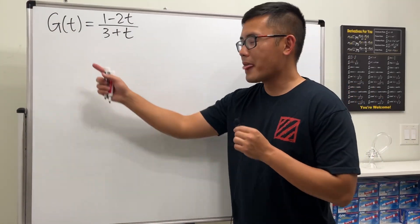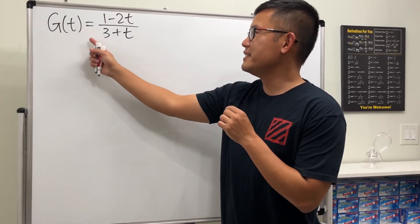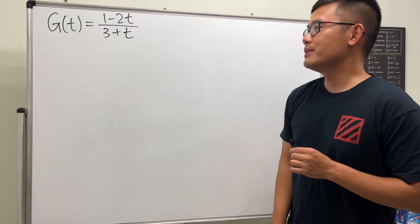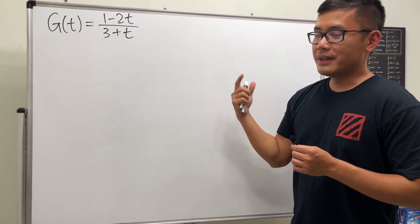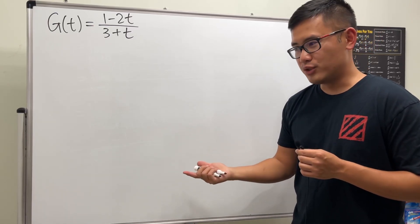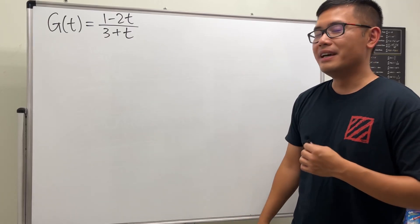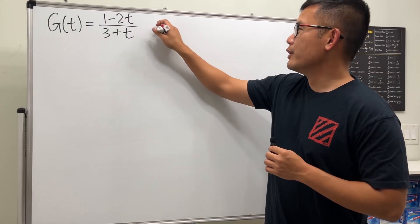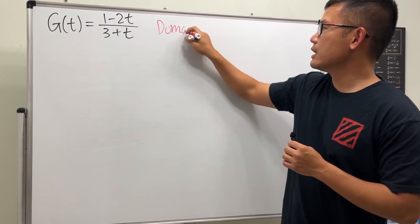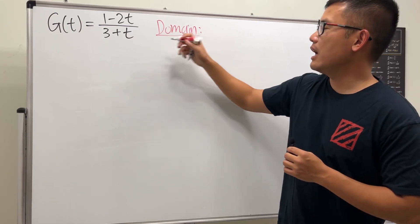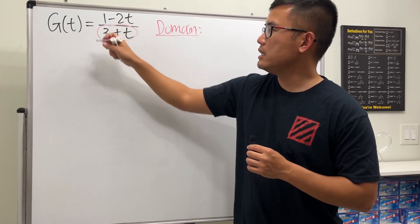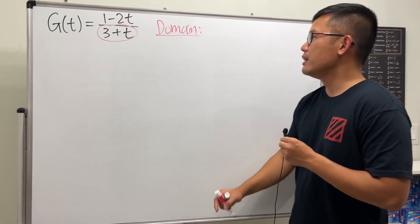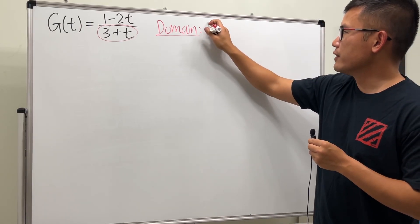Here we have our function g(t) = (1 - 2t) / (3 + t). Let's do the following: find the domain, then use the definition of the derivative to find its derivative, and also find the domain of the derivative. For the domain, because we have t in the denominator, we need to make sure that 3 + t cannot equal 0, meaning t cannot equal negative 3.